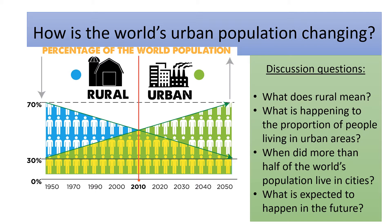And the final question: what is expected to happen in the future? We're expecting the percentage of people living in rural areas to decline all the way down to around 30% by the year 2050, and the percentage of people living in urban areas to go up to about 70%. So we will have seen a total reversal in the pattern. At this moment in time, just over 50% of the world live in towns and cities, and the other 50% or just under still live in the countryside. In wealthy countries like ours, between 80 and 90% of people live in urban areas, but that's not still the case for very poor countries.